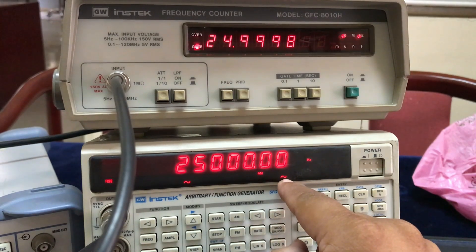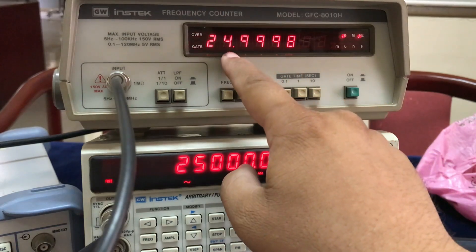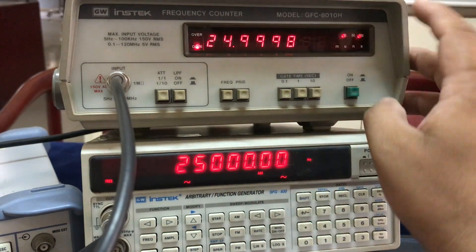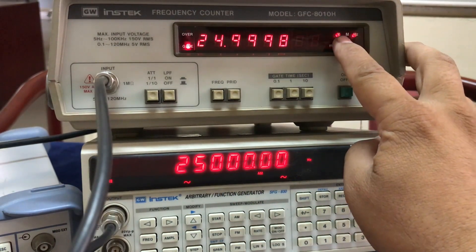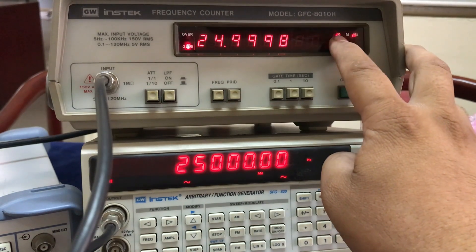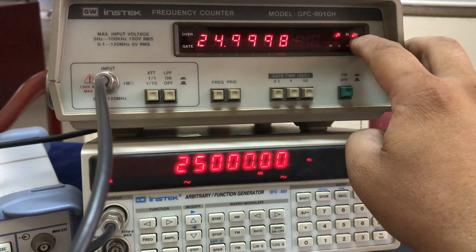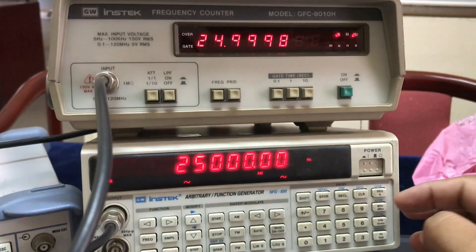The waveform is somewhere around a sinusoidal wave and the frequency that I'm getting is about 24.998. You can see two lights are blinking, one for K is highlighted. K means kilo and hertz, so kilohertz.